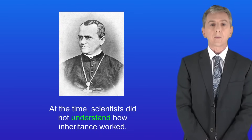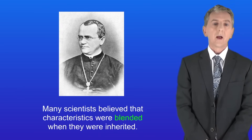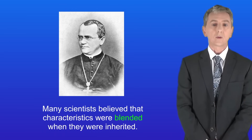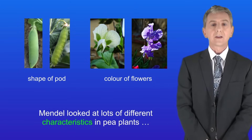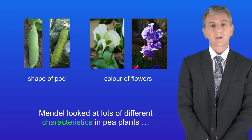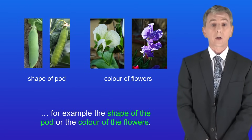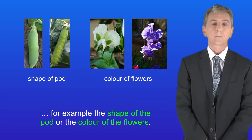At the time scientists did not understand how inheritance worked. Many scientists believed that characteristics were blended when they were inherited. Mendel looked at lots of different characteristics in pea plants, for example the shape of the pod or the colour of the flowers.